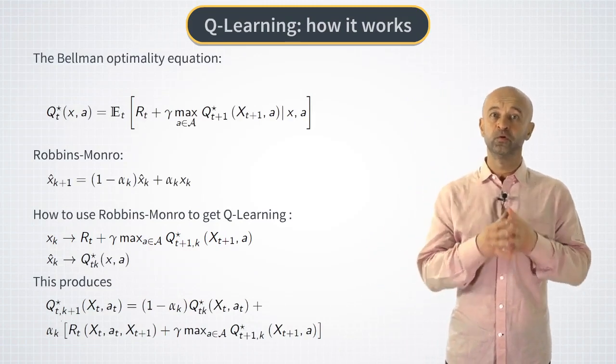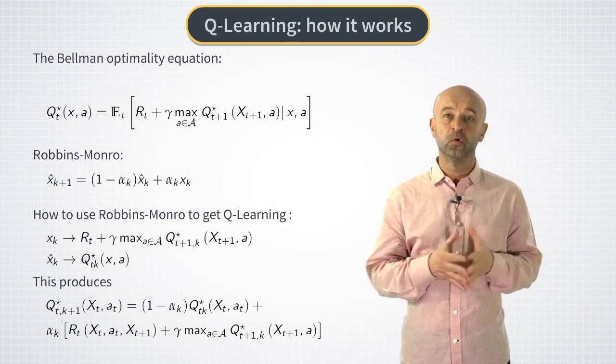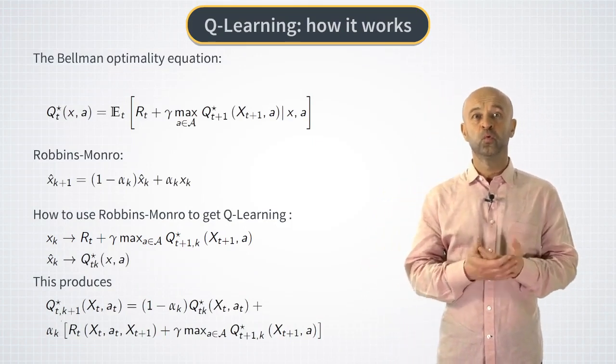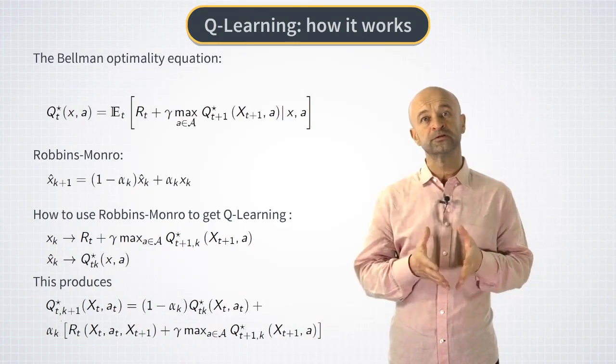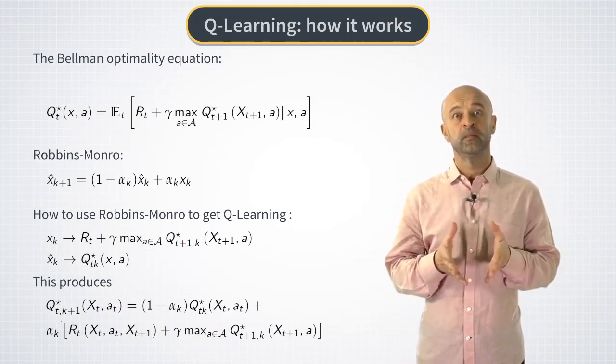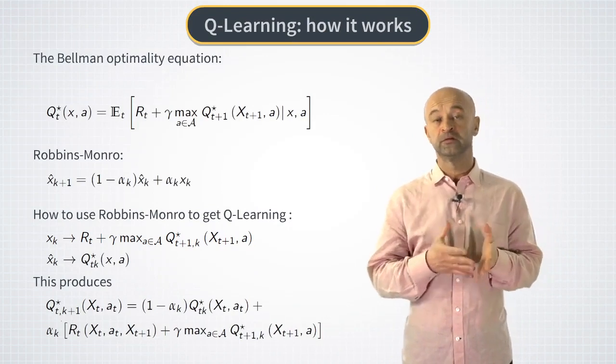It's also an off-policy algorithm because the only thing that matters for Q learning to work is that all action state pairs will be visited many times, but why they were visited does not matter.